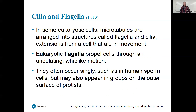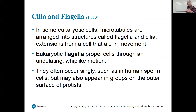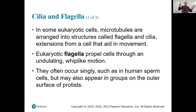Unfortunately, some bacteria also have flagella, but they're not like eukaryotic flagella — they should have used a different name because prokaryotic and eukaryotic flagella are quite different. Flagella often occur singly, such as in human sperm cells, but may appear in groups on the outer surface of protists. Sperm cells are the only human flagellated cell.